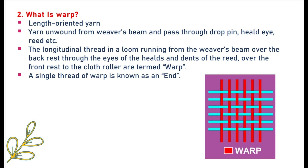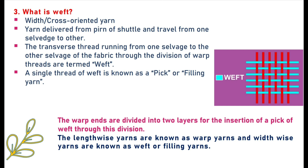A single thread of warp is known as an end. Next question: what is weft? Weft is the width-oriented or cross-oriented yarn. Yarn delivered from the pirn of the shuttle travels from one selvedge to the other. The transverse thread running from one selvedge to the other selvedge of the fabric through the division of warp threads is the weft. A single thread of weft is known as a pick or filling yarn. The warp ends are divided into two layers for the insertion of a pick of weft through this division. The lengthwise yarns are known as warp yarns and widthwise yarns are known as weft or filling yarns.